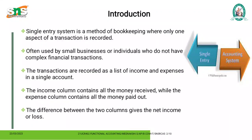There are two columns used. One column is for recording income transactions and the other column is for expense transactions. The difference between the two columns gives the net income or loss under the single entry system. These are the basic meanings of single entry system.